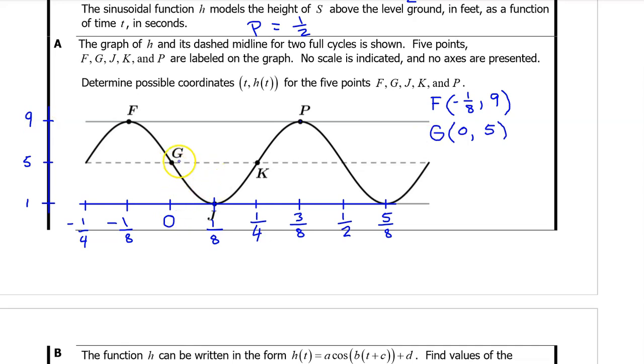Point F is at negative one eighth, comma, nine. Point G is at zero, comma, five. Point J is at one eighth, comma, one. Point K is at one fourth, comma, five. And point P is at three eighths, comma, nine.